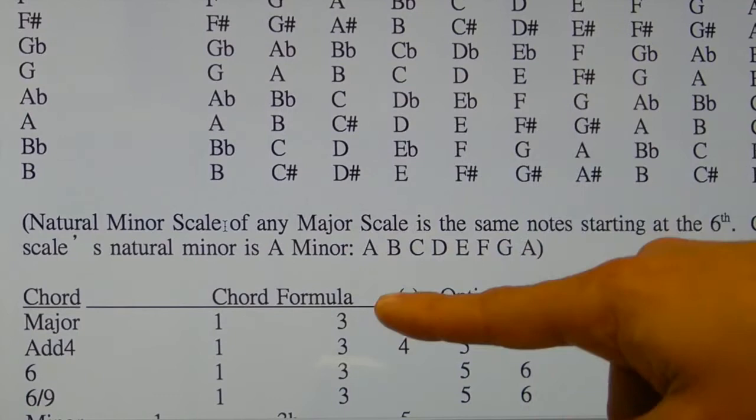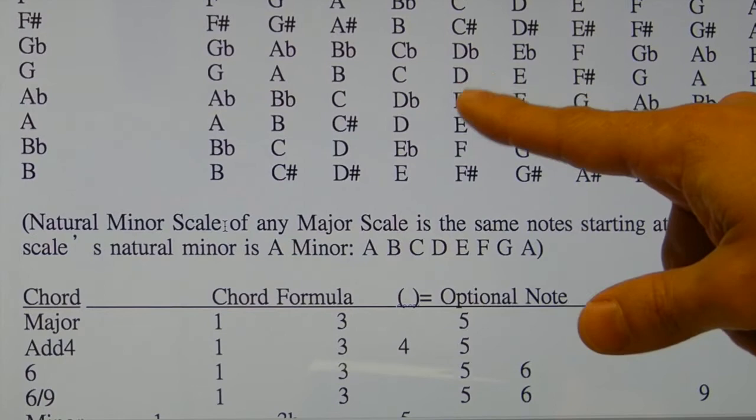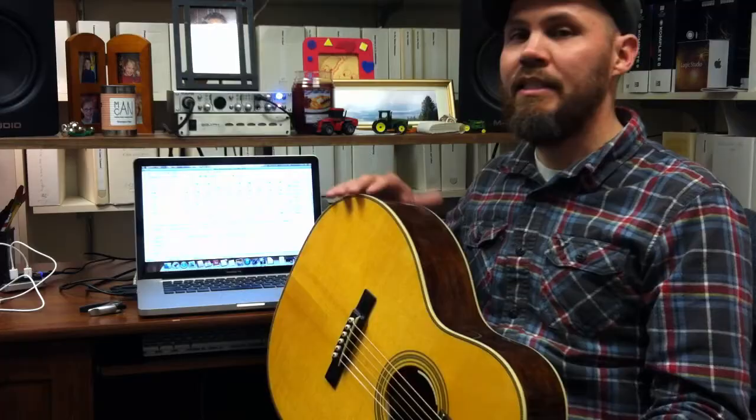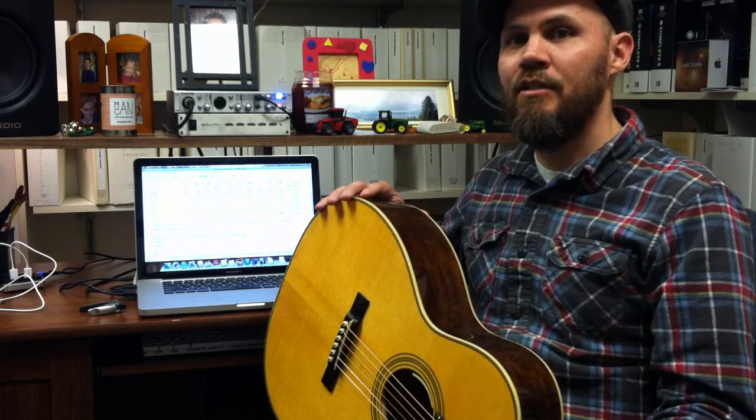So a G chord is made of a G note, which is the first note in the scale, a B note, which is the third note in the scale, and a D note, which is the fifth note in a scale. So any G, B, and D make up a G chord, any combination of those notes.